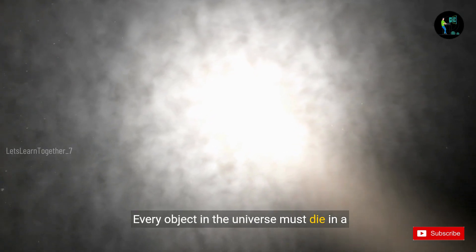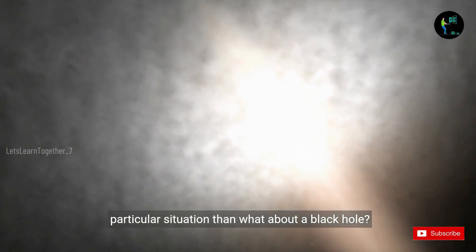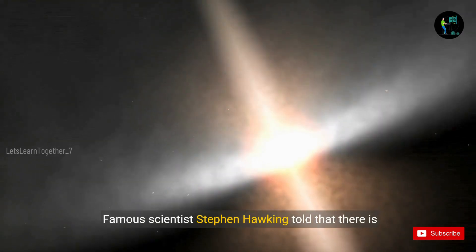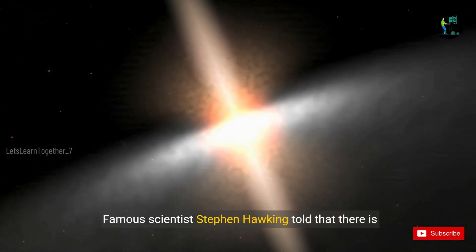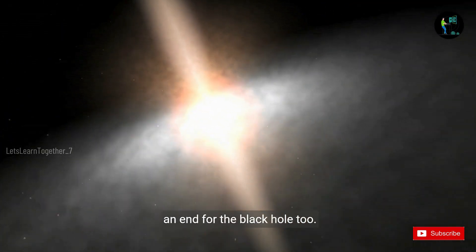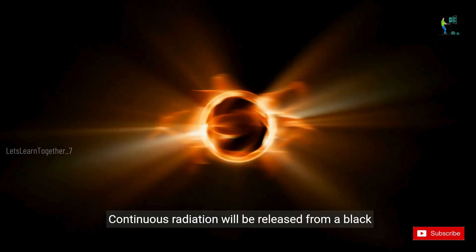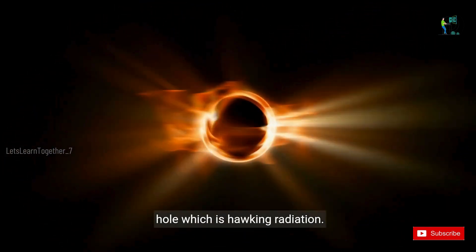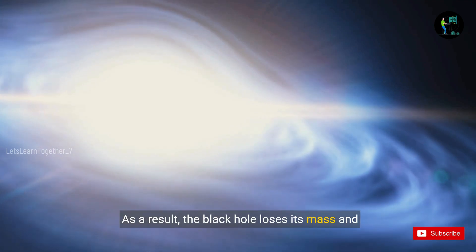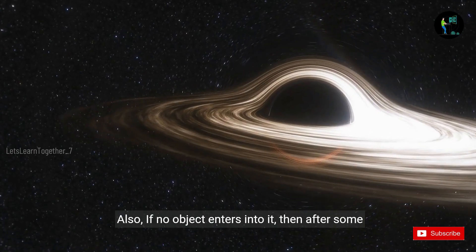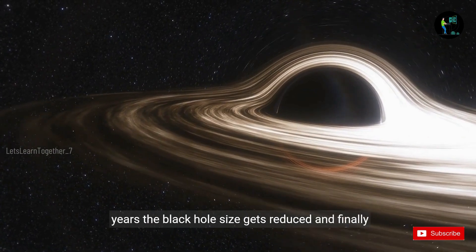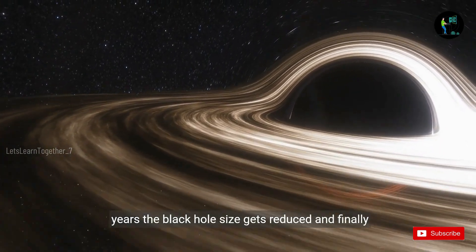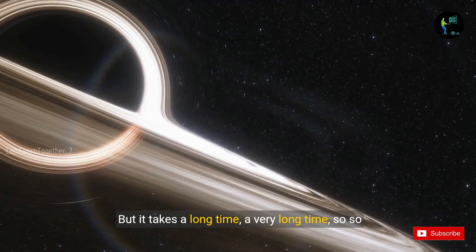Every object in the universe must die in a particular situation. Then what about a black hole? Famous scientist Stephen Hawking told that there is an end for the black hole too. Continuous radiation will be released from a black hole, which is Hawking radiation. As a result, the black hole loses its mass and energy. Also, if no object enters into it, then after some years, the black hole size gets reduced and finally evaporates. But it takes a long time.